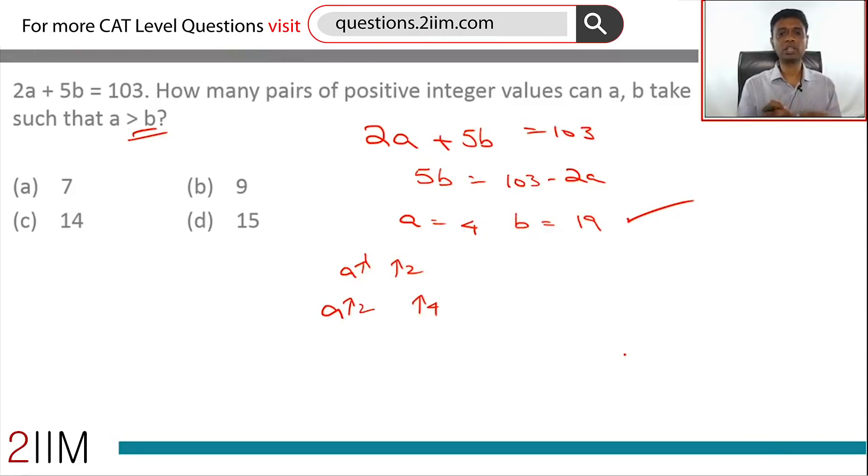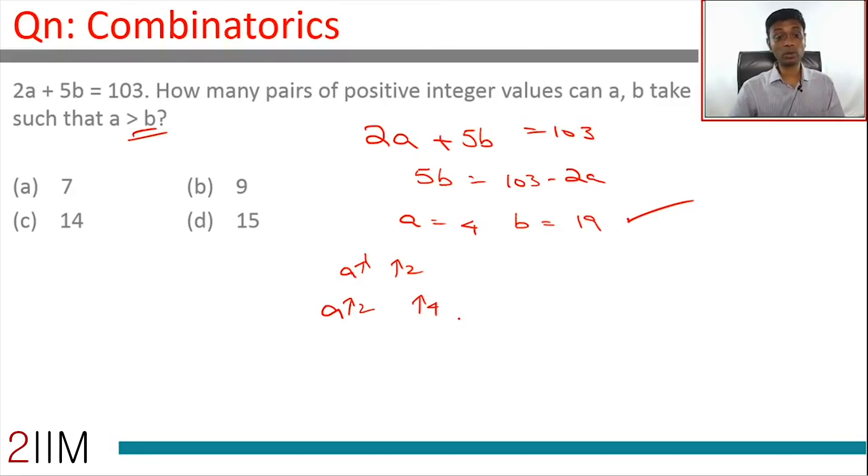Twice of that number should be a multiple of 5. So if a increases by 3, the total will increase by 6. That cannot be offset. If a increases by 4, total will go up by 8. That cannot be offset. a should increase by 5 so the total goes up by 10. Then 5b can be made to fall by 10 by reducing b by 2.